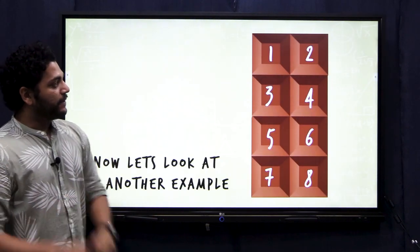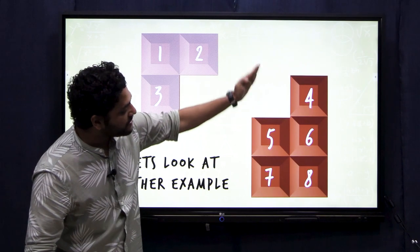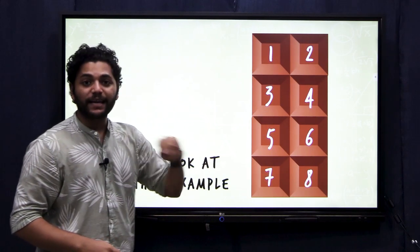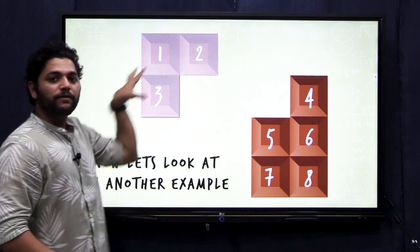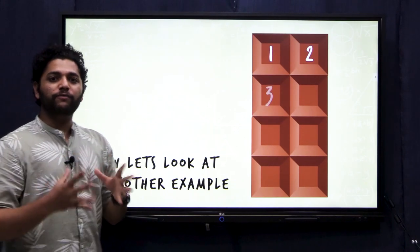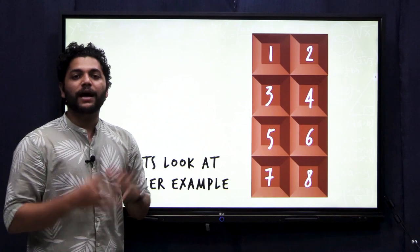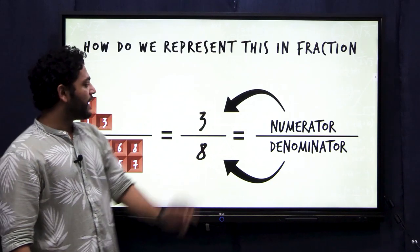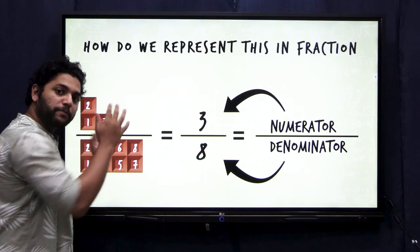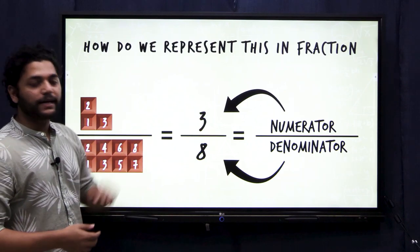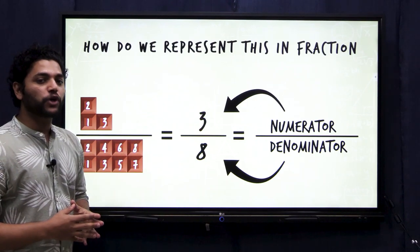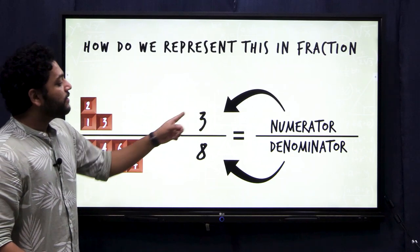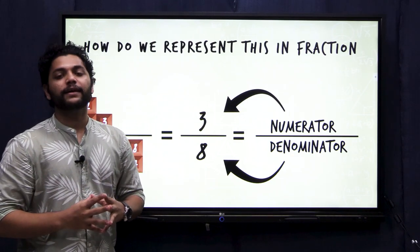Let us look at another example. I have a chocolate block which has been divided into eight equal parts. I decide to take three parts for myself. What fraction of the chocolate do I have? I got three parts from the whole, so I write three in the numerator, and the chocolate was divided into eight equal parts, so eight comes as the denominator. I can say that I got three-eighths of the whole chocolate.